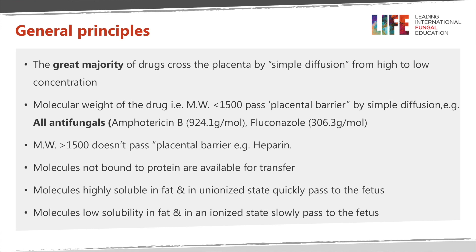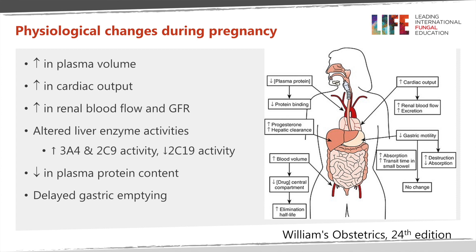Let's look at the physiological changes that occur during pregnancy. Compared to the pre-pregnancy state, during pregnancy there is an increase in plasma volume of up to 30 to 50 percent. There is also an increase in cardiac output of up to 30 to 50 percent. Because most of the cardiac output goes to the kidneys, you get an increase in renal blood flow of up to 50 to 60 percent, and because of the increased renal blood flow you also get an increase in glomerular filtration rate of up to 60 percent.